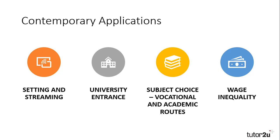The most obvious application of this for contemporary society is setting and streaming. Students are sifted and sorted based upon their perceived ability into different sets for subjects, or can be limited in the subject choices they have based upon their academic performance. We can see further evidence of this through the University Admissions System UCAS, with offers made to students based upon their predicted ability in a subject area.